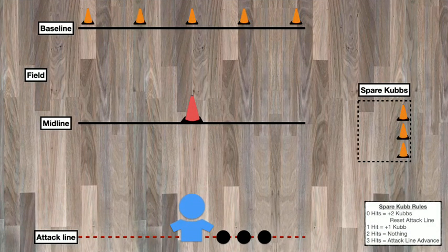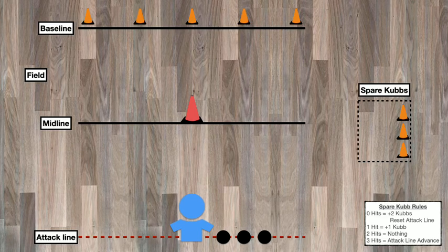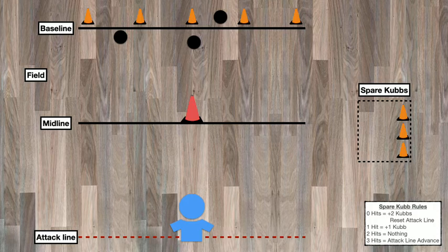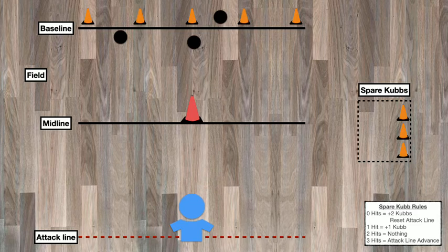Now let's start a new game and take a look at a few of the situations we haven't quite addressed yet. On this turn, you'll notice the player missed, unfortunately, with every single toss. So when we look off to the side for the spare Kubbs rules, what's going to happen is we're actually going to add two Kubbs. It also says reset the attack line, but we'll worry about that in just a minute.